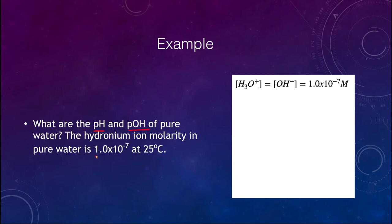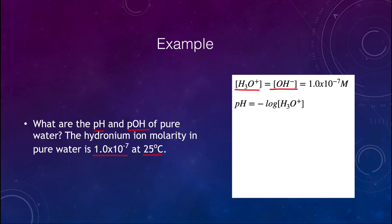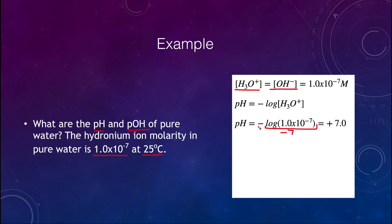For pure water, the hydronium ion has a molarity of 1×10⁻⁷ at 25°C. Because this is pure water it is neutral, so the concentrations are the same — both hydronium and hydroxide are 1×10⁻⁷ molar. The pH is then given by minus the log of 1×10⁻⁷, which is negative 7, and the negative of negative 7 gives us a pH of positive 7, signifying a neutral solution.